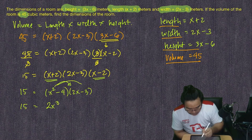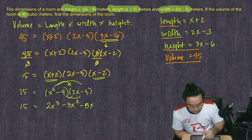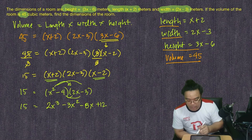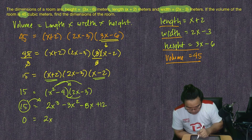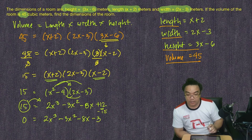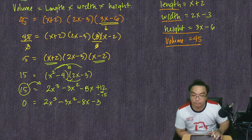Distributing (x² − 4)(2x − 3): we get 2x³ − 3x² − 8x + 12 = 15. Since we are solving a cubic polynomial, we equate to zero by subtracting 15 from both sides: 2x³ − 3x² − 8x − 3 = 0.